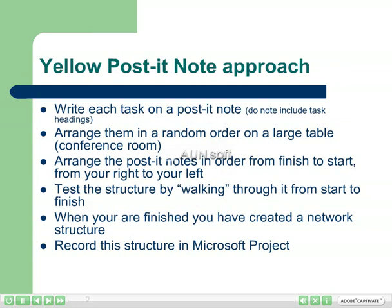To use the yellow post-it note approach, start by writing each task on a yellow post-it. You don't need to include the category heading tasks. Arrange them in a random order on a large table — you could use a conference table for this. Take the last task to finish and place it at your far right, then work backwards from the end of the project to the front, arranging the yellow post-its from right to left.